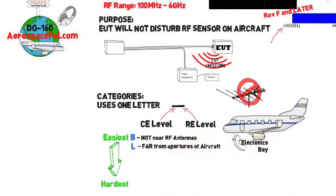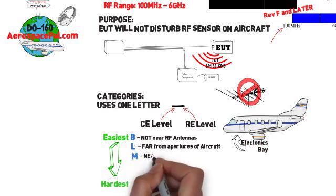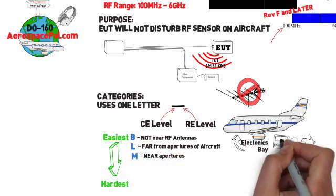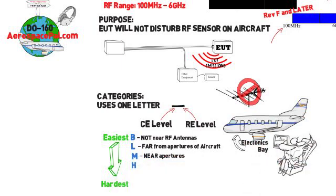M: This is for equipment that may be near apertures of the aircraft but not in direct view of RF antennas. For example, the cabin or cockpit. H: Has a direct view of the RF antennas usually on the outside of the aircraft.